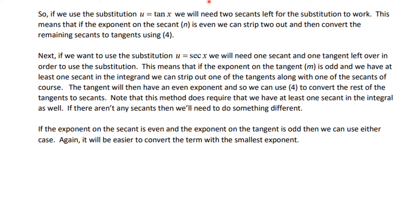If we're going to make a substitution of u equal tangent x, we need to strip out two secants to make the substitution work. If we want to make the substitution u equal secant x, we'll need a secant x and a tangent x left over. If the exponent on the tangent is odd, we have at least one secant in the integrand and can strip out one tangent along with one secant, leaving an even tangent exponent to convert via the identity.